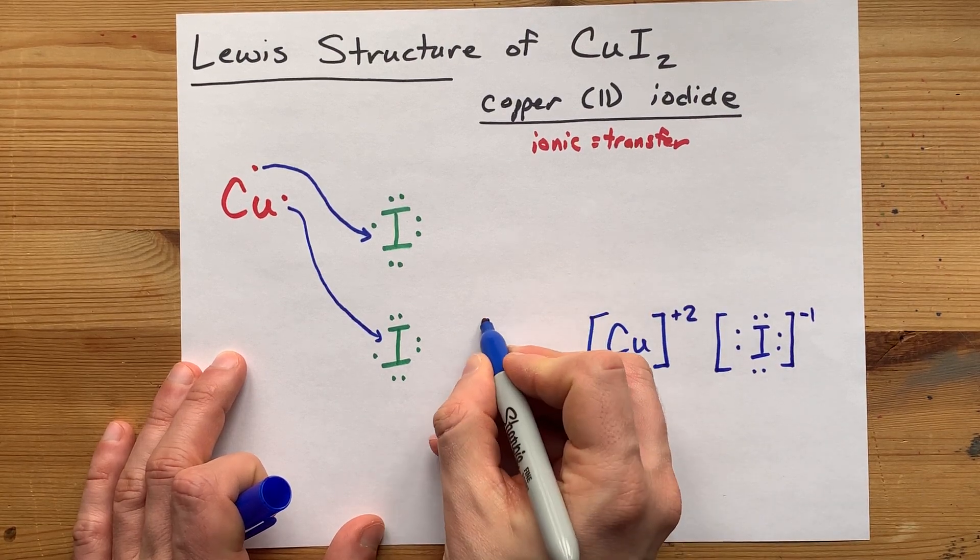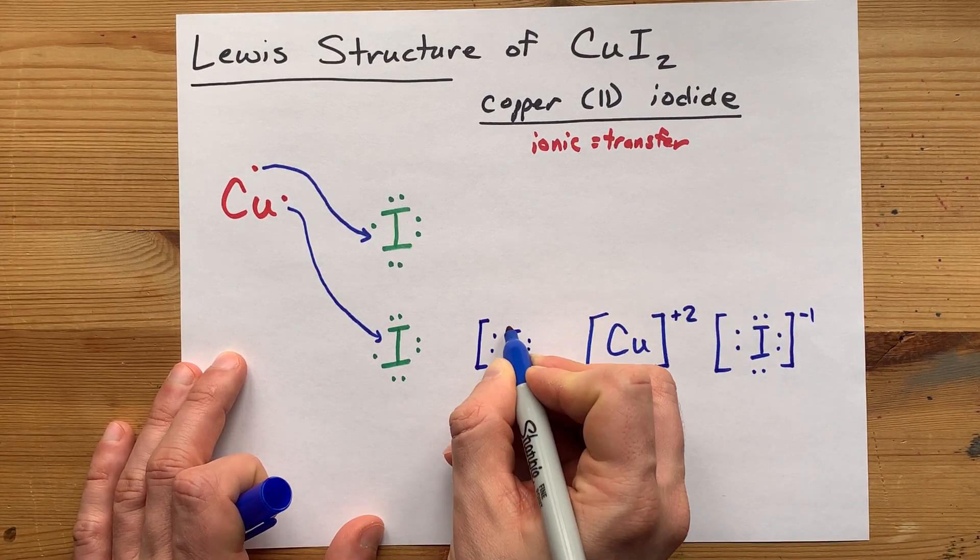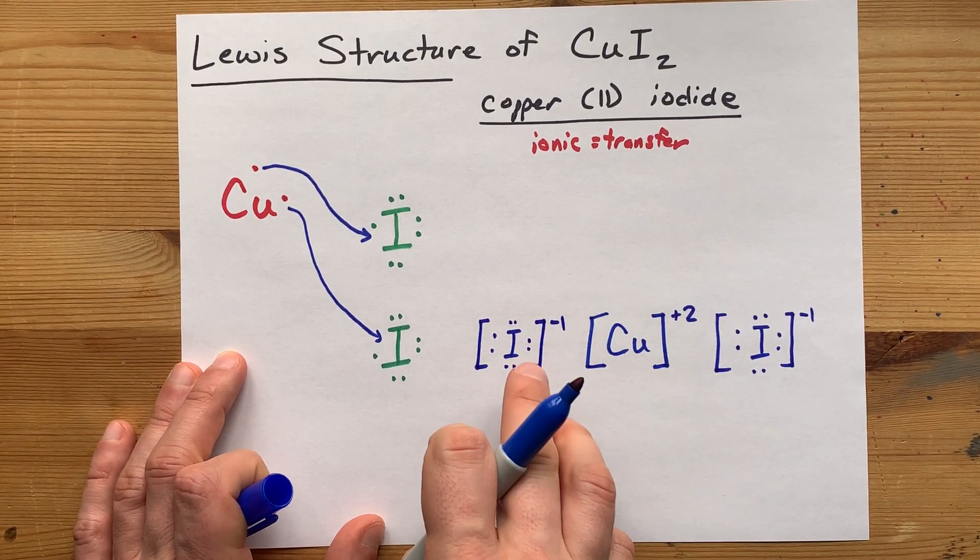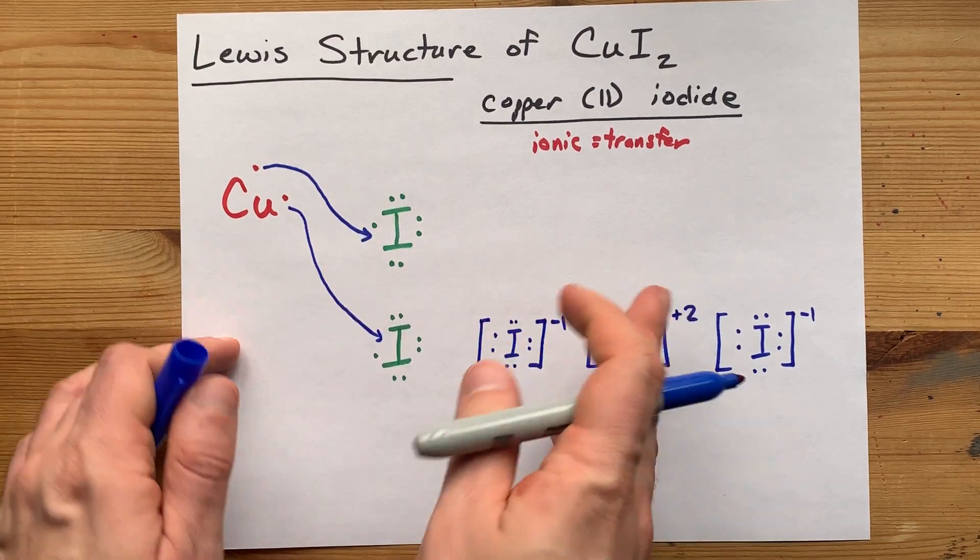That means they have a -1 charge, one extra negatively charged electron. You'll have to draw two of them because you needed two of them to accept the electrons from copper.